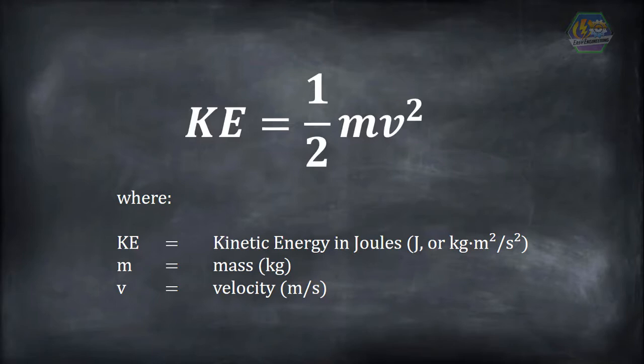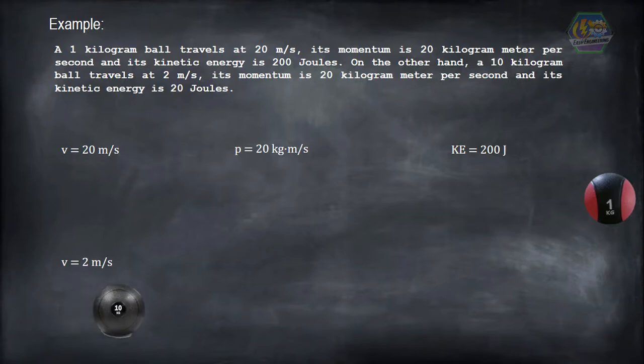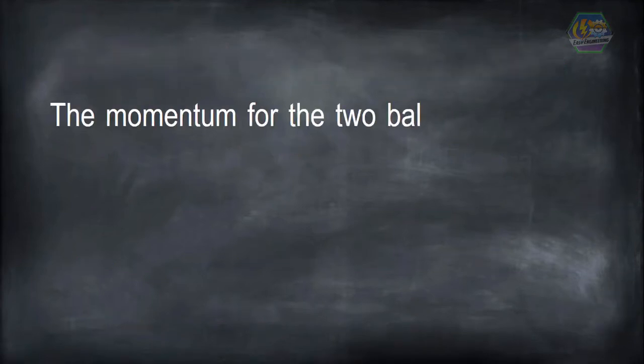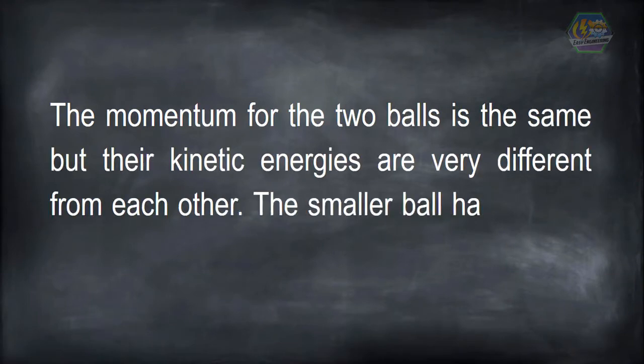Take a look at this example. A 1 kilogram ball travels at 20 meters per second; its momentum is 20 kilogram meter per second and its kinetic energy is 200 joules. On the other hand, a 10 kilogram ball travels at 2 meters per second; its momentum is 20 kilogram meter per second and its kinetic energy is 20 joules. The momentum for the two balls is the same, but their kinetic energies are very different from each other. The smaller ball has a much higher kinetic energy.